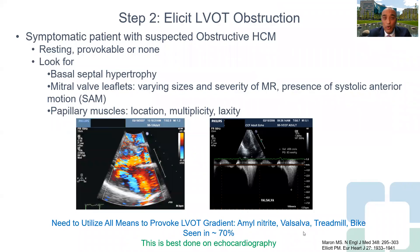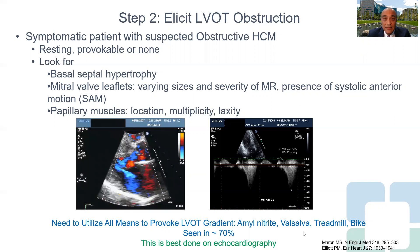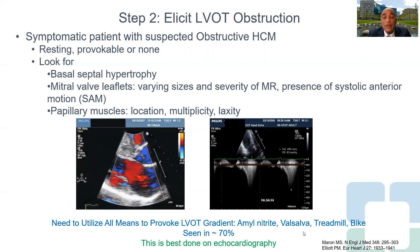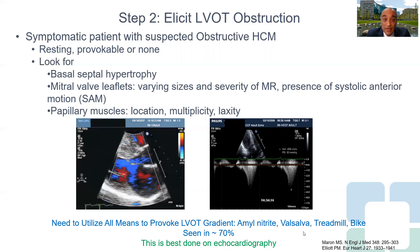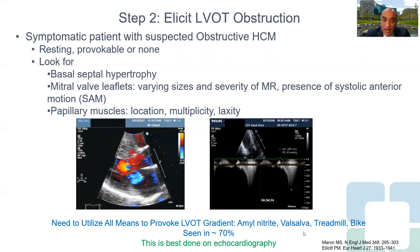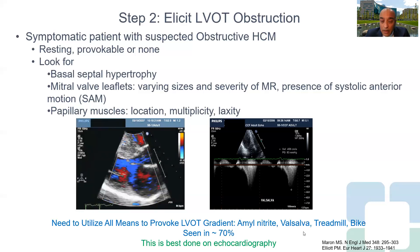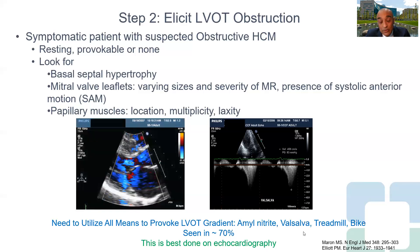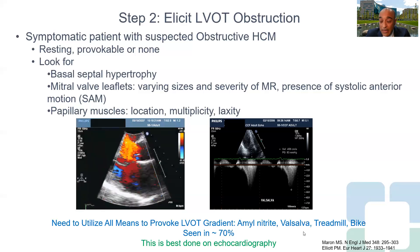Step two: if you are suspecting a symptomatic patient has obstructive hypertrophic cardiomyopathy, you need to be able to elicit an LV outflow tract gradient — which could be at rest, provocable, or non-existent. To do a full job, you need to look for basal septal hypertrophy, understand what is happening to the mitral valve leaflets, their insertion, and whether they are associated with systolic anterior motion. You also need to understand the papillary muscles — how many there are, whether they are abnormally inserting or hypermobile. Utilize all means to provoke the gradient: amyl nitrite, Valsalva, treadmill, upright bike. If looked for carefully, outflow tract gradient is seen in about 70% of patients.